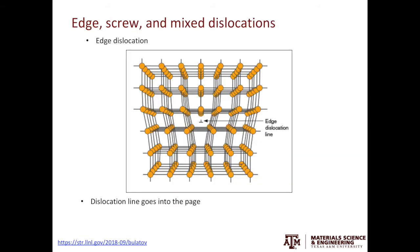After understanding why we need dislocations for plastic deformation, let's look at what types of dislocations can exist in a crystalline material. There are three types: edge dislocations, screw dislocations, and mixed dislocations.